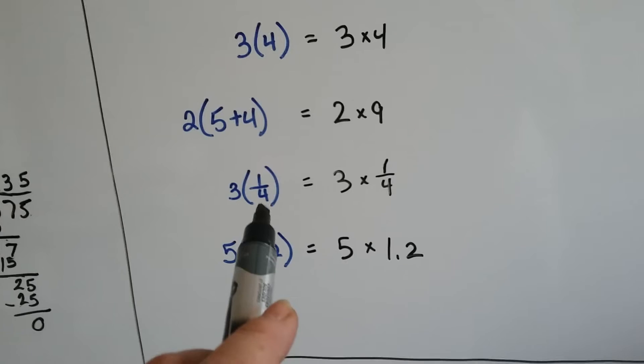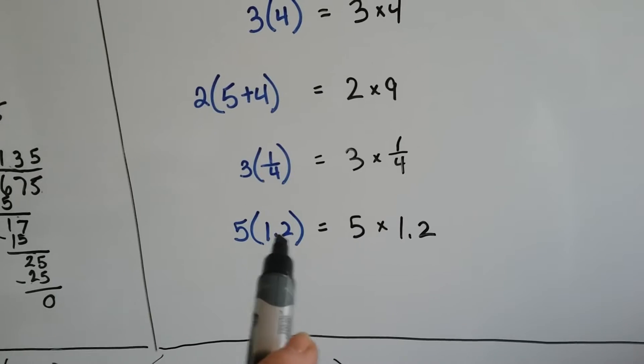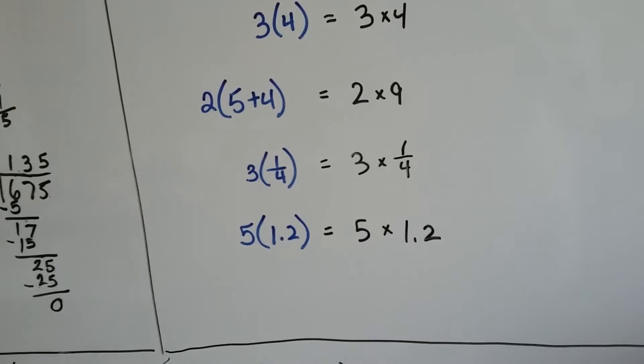3 next to parentheses with 1 fourth means 3 times 1 fourth. 5 next to parentheses with 1.2 means 5 times 1.2.